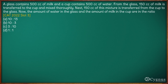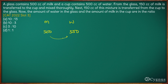In this question, a glass contains 500 cc of milk and a cup contains 500 cc of water. Both quantities are 500 cc initially. From the glass, 150 cc of milk is transferred to the cup, and then 150 cc is transferred back from the cup to the glass. We have to figure out the amount of water in the glass and the amount of milk in the cup.